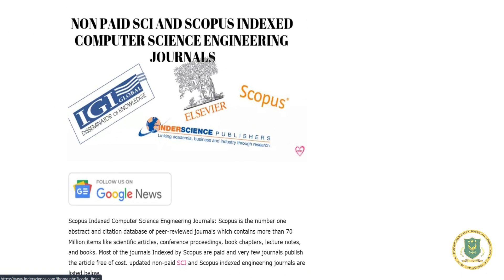Before we see the list of computer science journals, let's learn about Scopus. Scopus is the number one abstract and citation database of peer-reviewed journals. It contains more than 70 million items like scientific articles, conference proceedings, book chapters, lecture notes, and books. Most journals indexed by Scopus are paid, and very few publish articles free of cost.